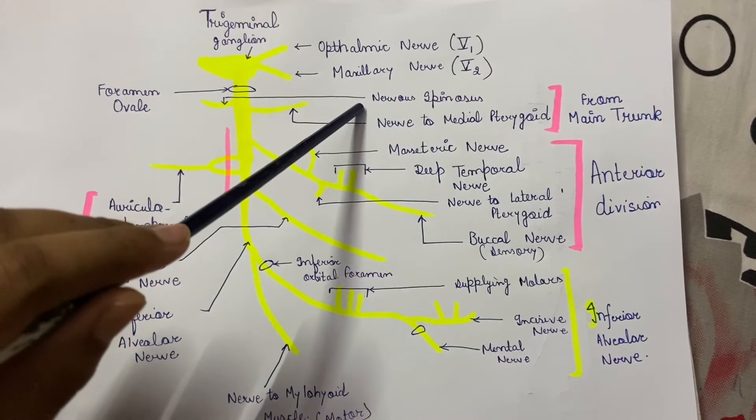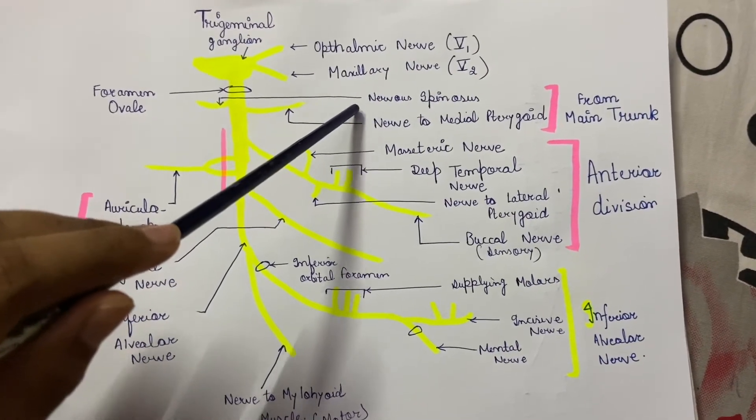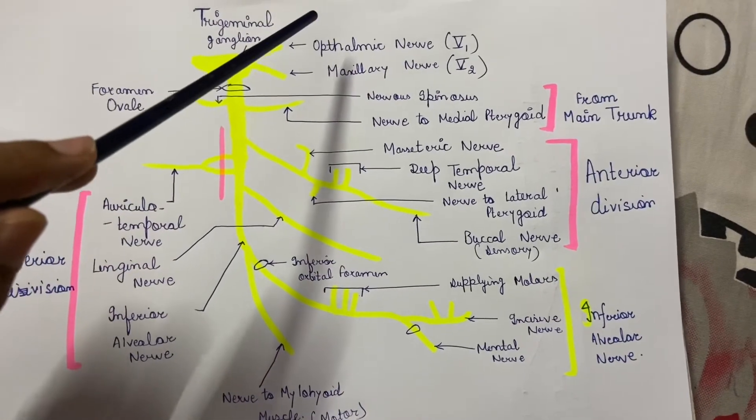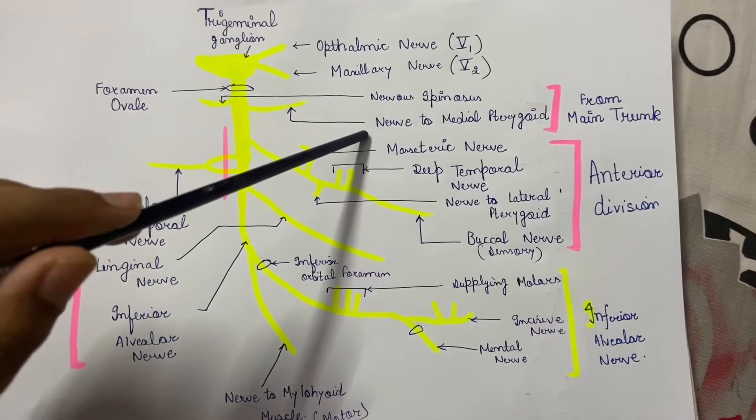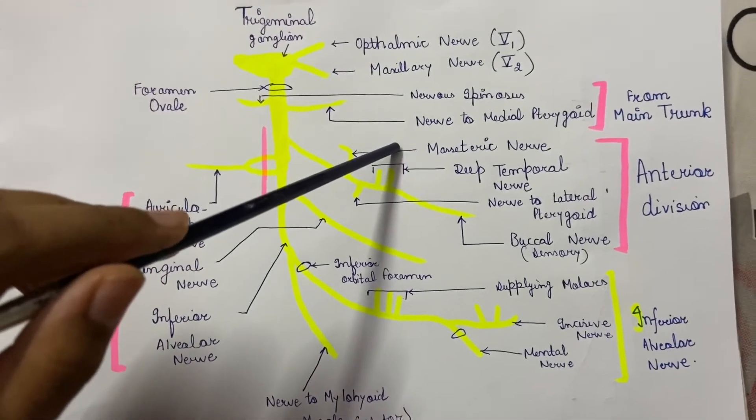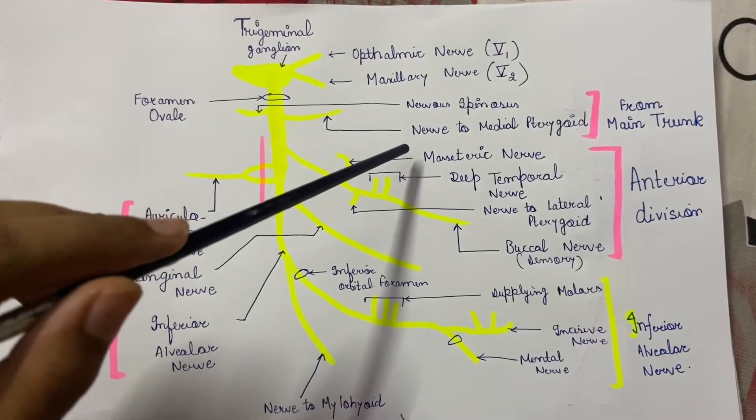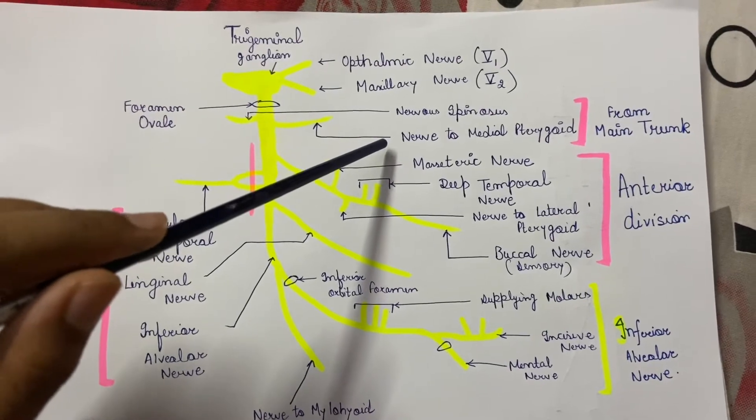This nervus spinosus is a sensory branch, also known as the meningeal nerve. It goes back to the brain and supplies the meninges. Whereas the nerve to the medial pterygoid is a motor branch which supplies the medial pterygoid muscle, which is a masticatory muscle.